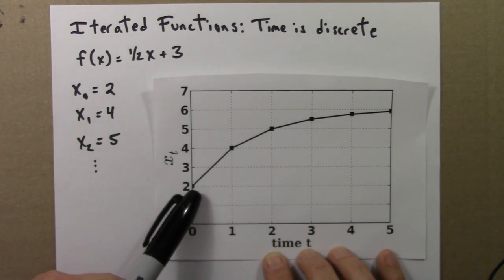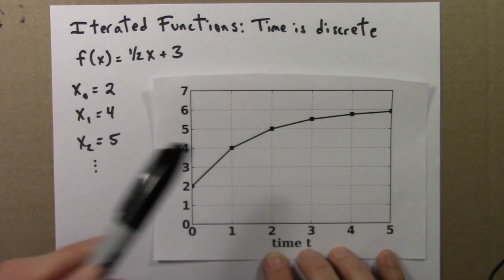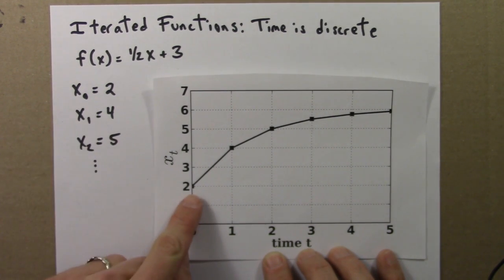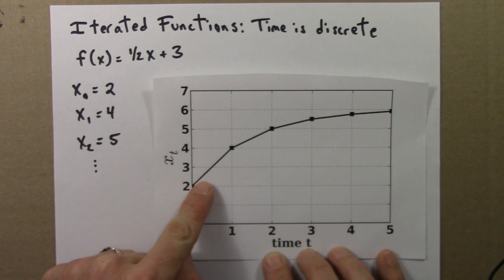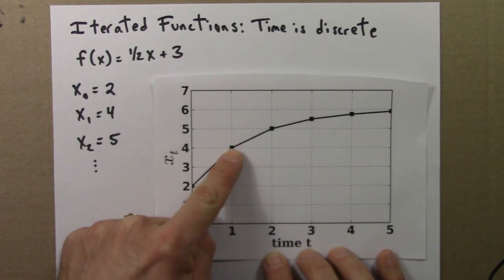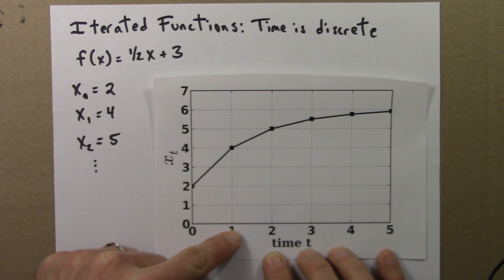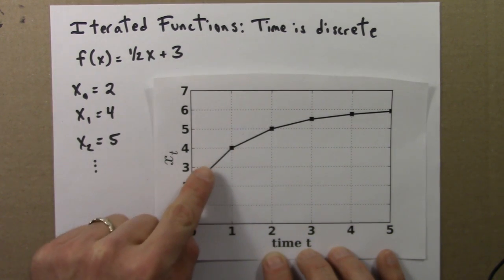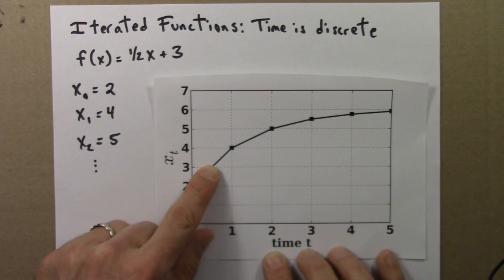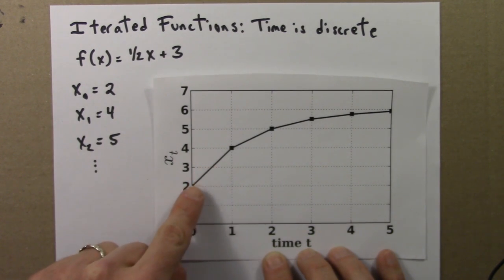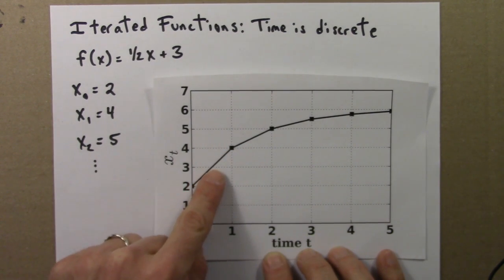But this line shouldn't be taken literally. The value jumps from 2 to 4 — it does not slide between 2 and 4. It has a value here, it has a value here, and it just jumps from one to the other. It doesn't have to pass through all these intermediate values.